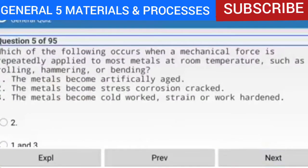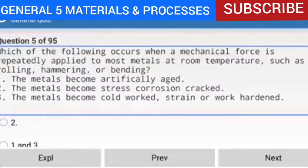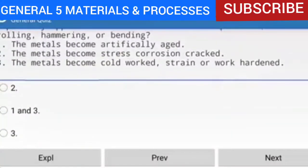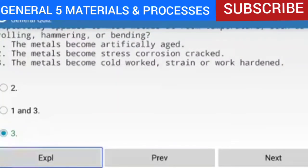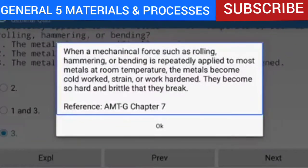Question 5 of 95: Which of the following occurs when a mechanical force is repeatedly applied to most metals at room temperature, such as rolling, hammering, or bending? The answer is option 3: the metals become cold-worked, strain- or work-hardened. When a mechanical force such as rolling, hammering, or bending is repeatedly applied to most metals at room temperature, the metals become cold-worked and strain-hardened. They become so hard and brittle that they break. Reference: AMTG Chapter 7.